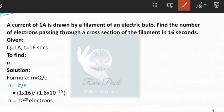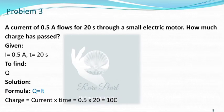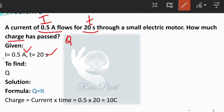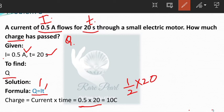We have found the unknown. In the third problem, a current of 0.5 amperes flows for 20 seconds through a small electric motor. How much charge has passed? Current I is 0.5 amperes and time is 20 seconds. We need to find the charge Q. Using Q is equal to I into T, substituting 0.5 and 20, we get 0.5 into 20, which is 1/2 into 20, giving 10 coulomb.